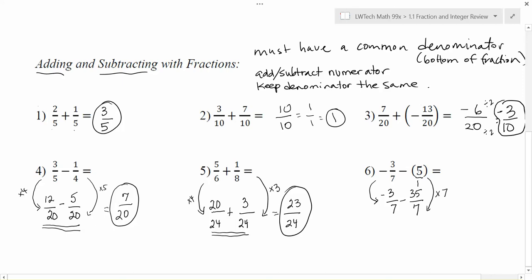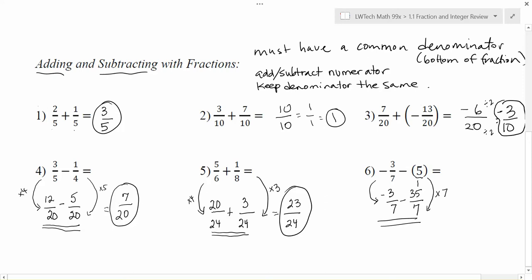Notice thirty-five over seven reduces back to five, so everything is equivalent. Now we can do the subtraction. On top we have negative three minus thirty-five. Change subtraction to addition and flip the sign: negative three plus negative thirty-five. Signs are the same, so we add: negative thirty-eight over seven. Check if it can be reduced — seven does not go into thirty-eight, so this is as simplified as it gets.